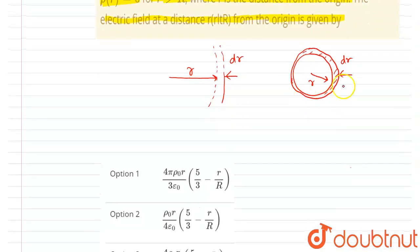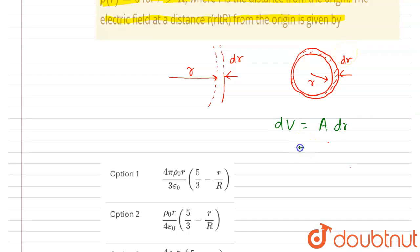Let us first find the volume of this shell. The volume dV equals area times thickness. For a spherical shell, the surface area is 4πr², so dV = 4πr² dr. This will be the volume of the shell.